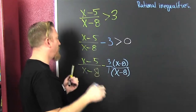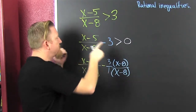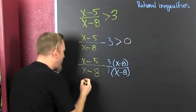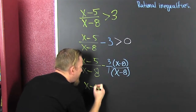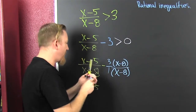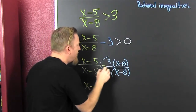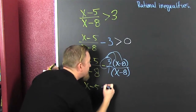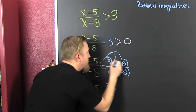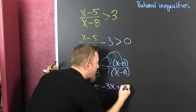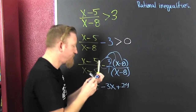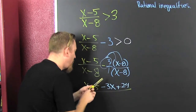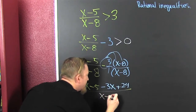That's the magic one. You want to be careful right here — this minus is attached to that 3. So that gives a minus 3x, and minus and minus make plus 24. And that's all over the common denominator, x minus 8.